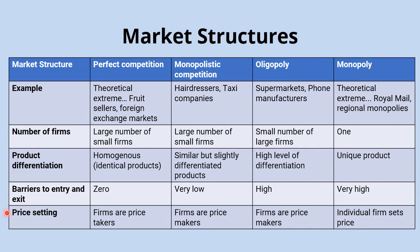When we categorize markets, we categorize them into four different types: perfect competition, monopolistic competition, oligopoly, and monopoly. This is just a brief introduction to some of the key characteristics of those different market structures, and you'll look at each of them in much more detail later.